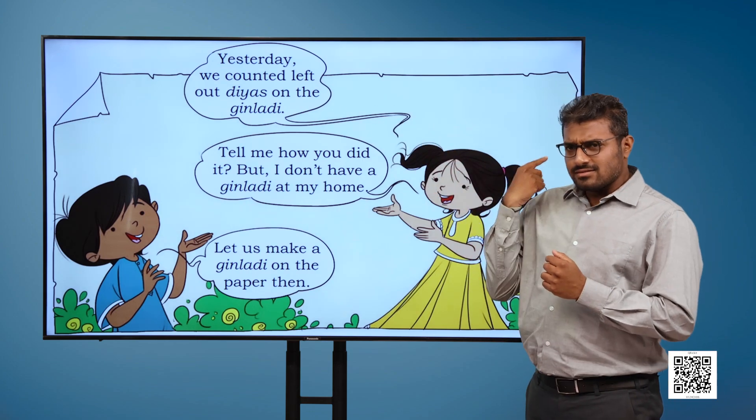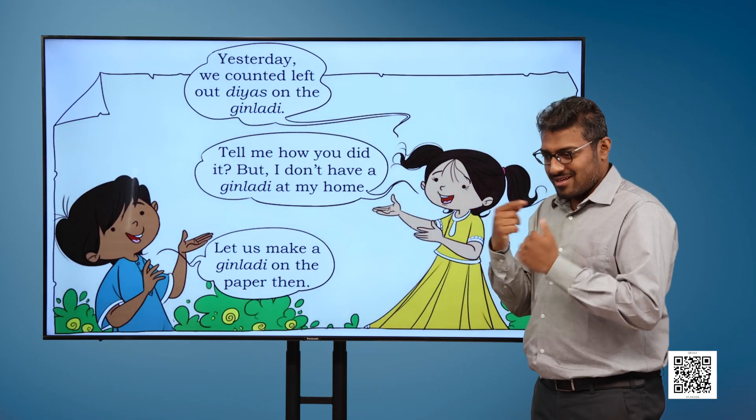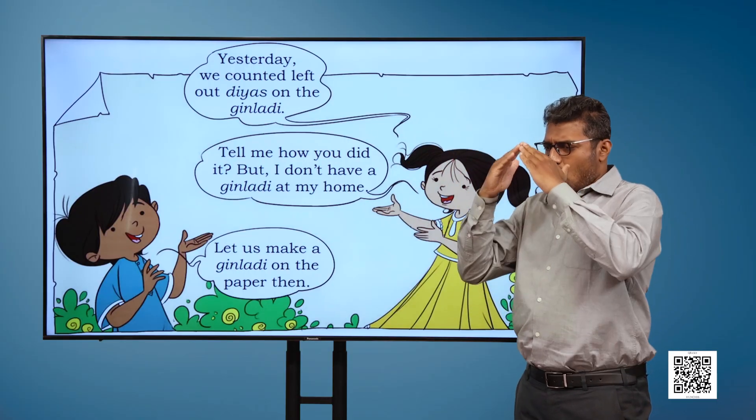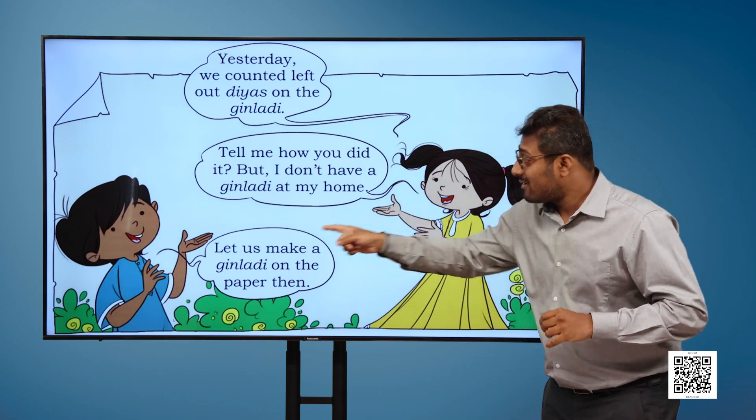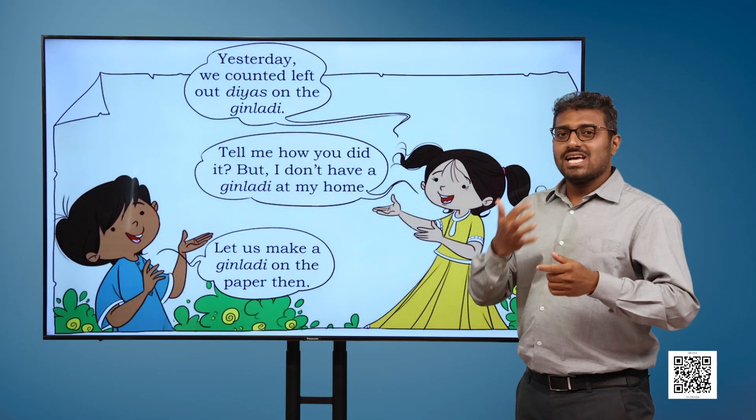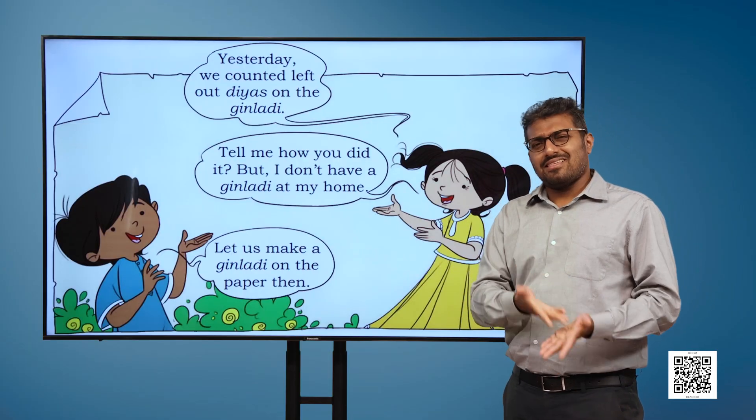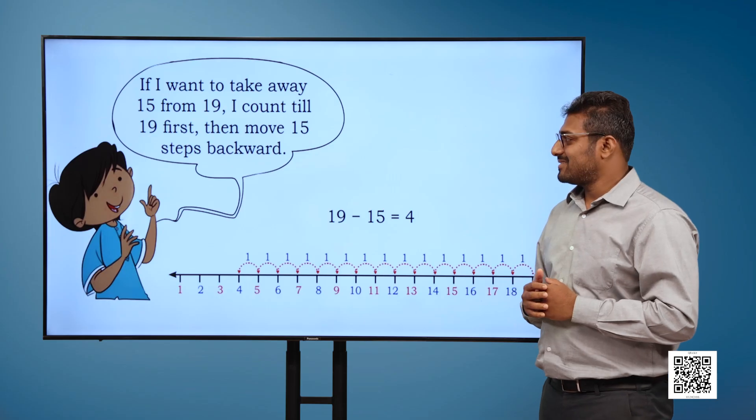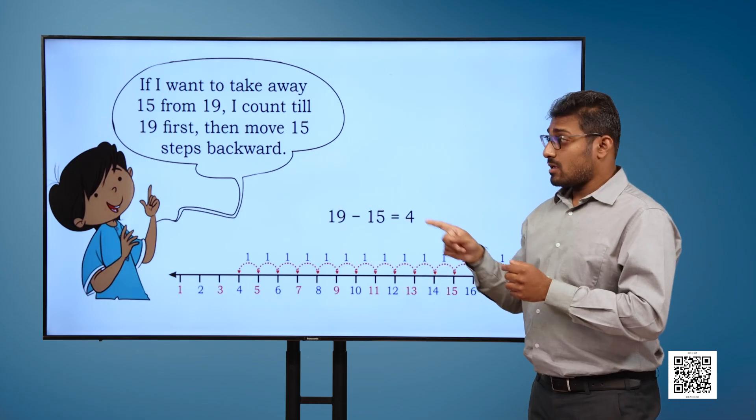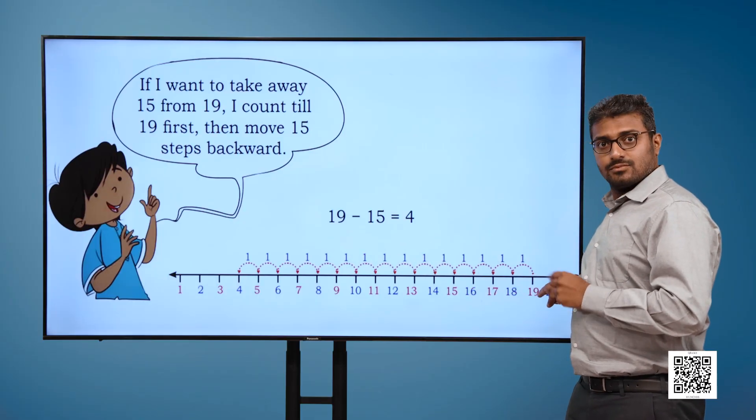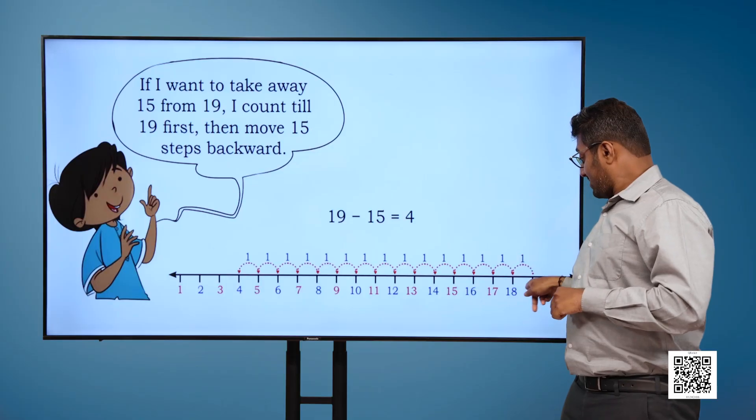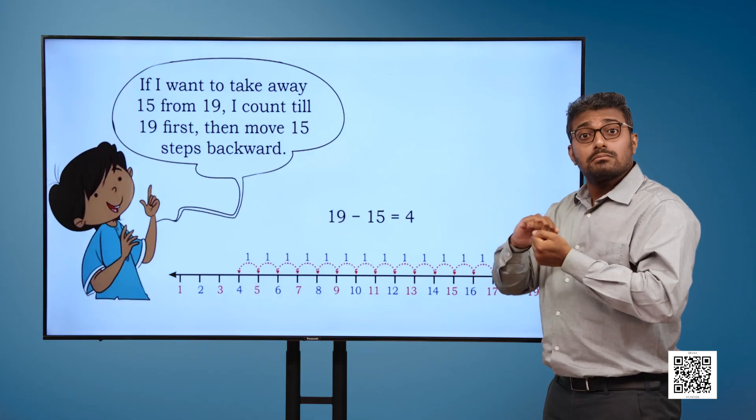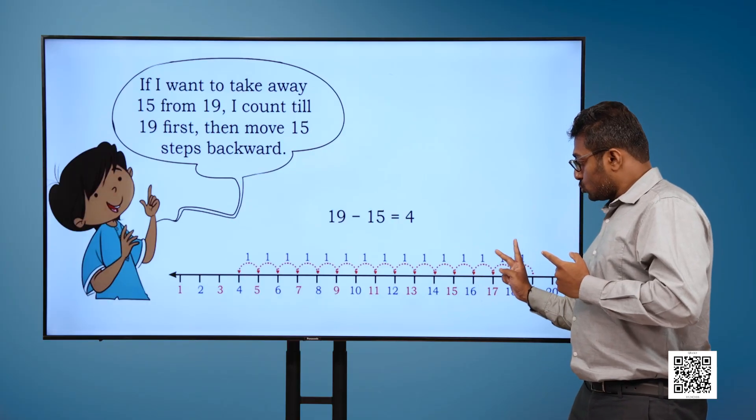The girl says, Yesterday we counted leftover diyas on the ginlari. Tell me how you did it, but I don't have a ginlari at my home. Let us make a ginlari on the paper then. If I want to take away 15 from 19, I count till 19 first. Then move 15 steps backward. That is 19 minus 15 is equal to 4.